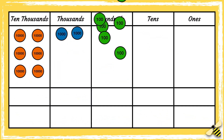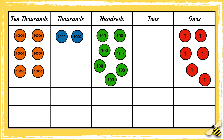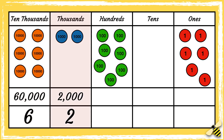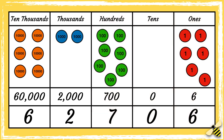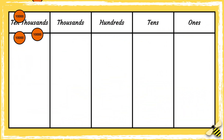Let's have a look at one more. What number is shown in the grid? Pause the video to give yourself time to work out the answer, press play when you're done. There are six ten thousands, two thousands, seven hundreds, zero tens and six ones, so the number is sixty two thousand seven hundred and six.